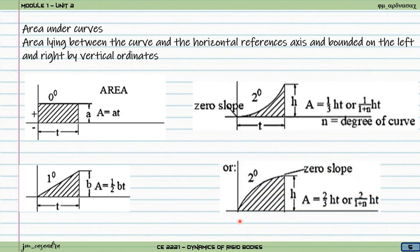The spandrel area can be computed as 1/3 times H times T for a second-degree curve, or more generally as 1 divided by (1 + N) times H times T, where N is the degree of the curve. So if the spandrel is a third-degree curve, the equation becomes 1/4 times H times T. For a curve that opens upward, the area is 1/3 HT; if it opens downward, the area is 2/3 HT — computed as the rectangular area minus the spandrel.